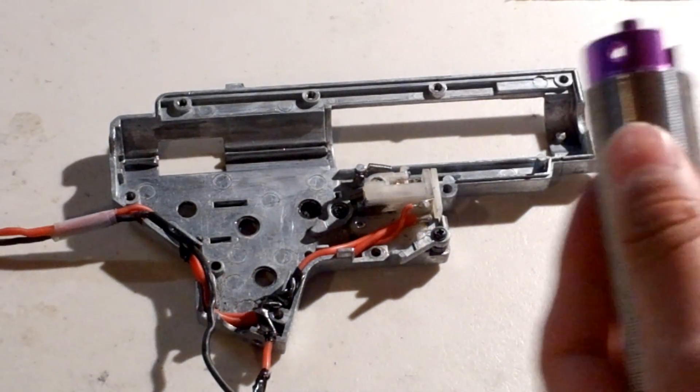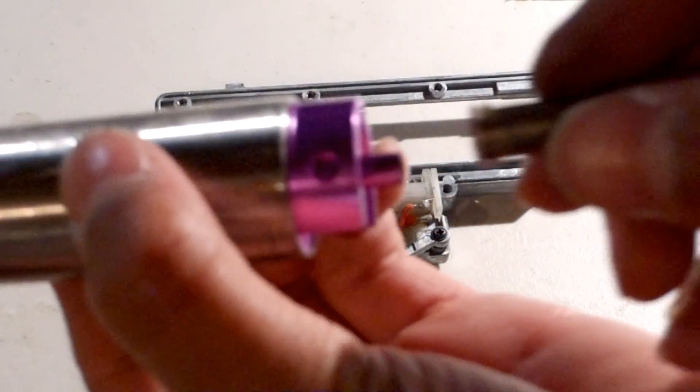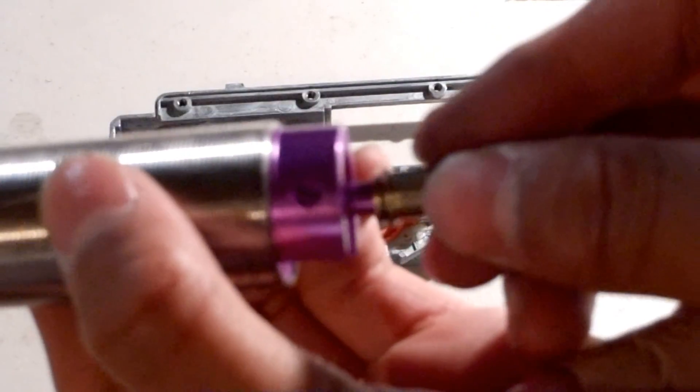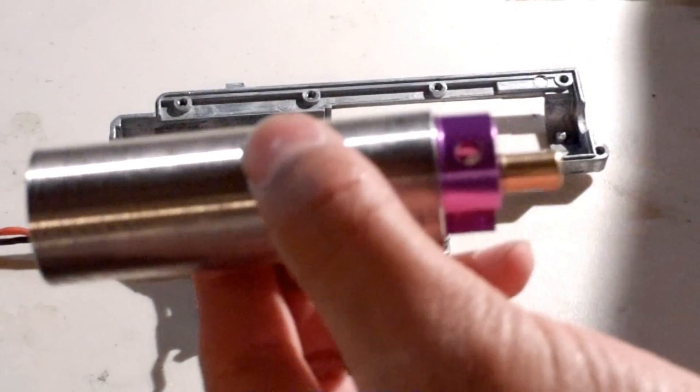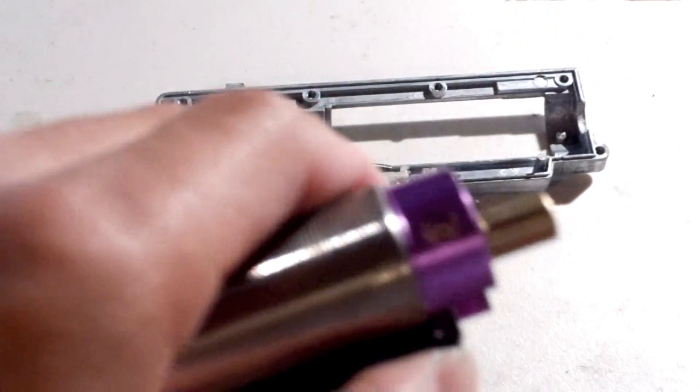Next, take the air nozzle and put it on the end of this. Next, take the tappet plate and put it on the end of the air nozzle.